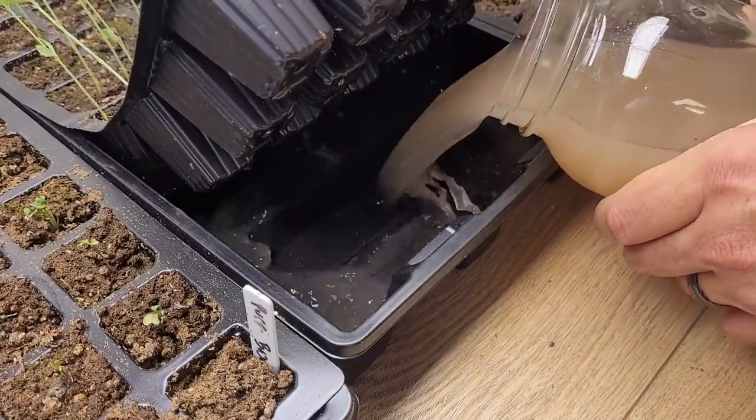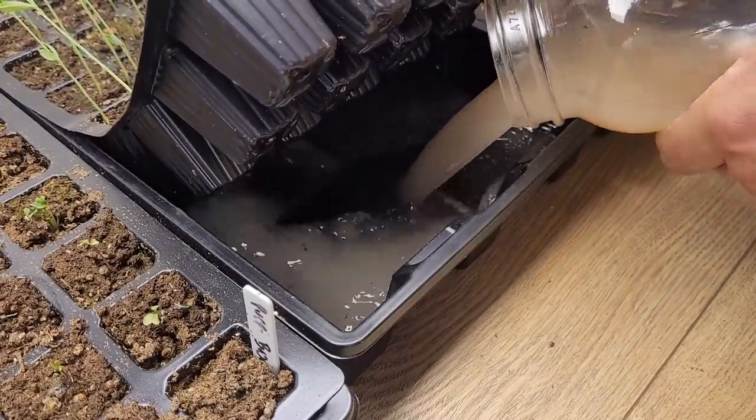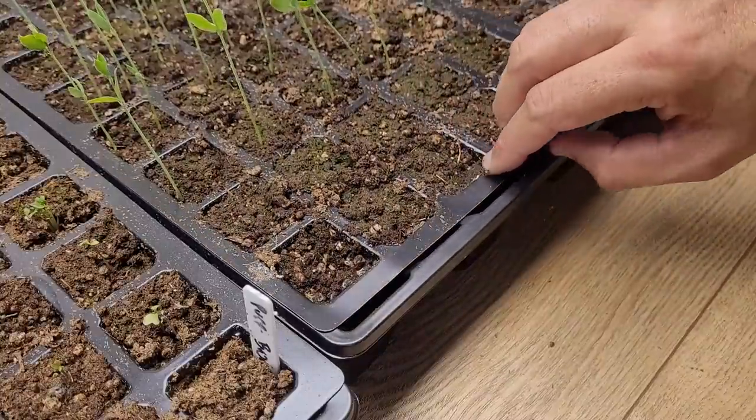Again, we water from below. You want to make sure that you're getting the entire root zone, and you want to keep the water off of the plants if possible. So watering from below definitely helps with that.